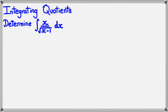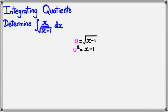In this question, I need to determine the integral of x divided by the square root of (x minus 1). This looks complicated but it's actually straightforward. I'm going to let u equal the square root of (x minus 1), so the denominator just becomes u. I could put u equal to (x minus 1), but that would leave a square root in the denominator. Squaring both sides gives u² = x minus 1, and rearranging, x equals u² plus 1.